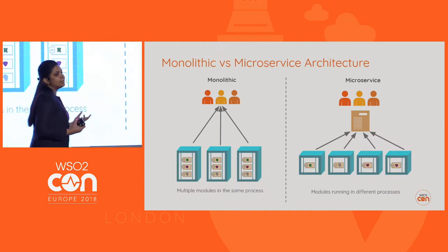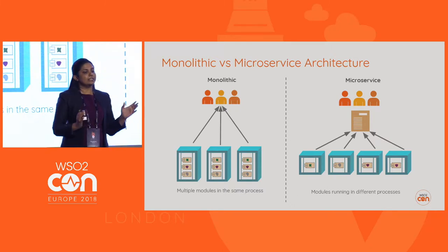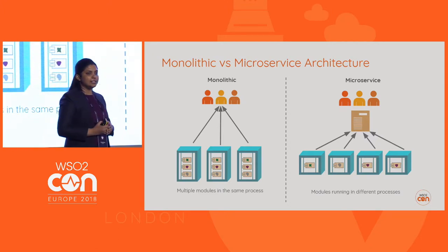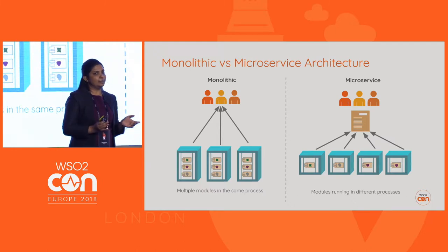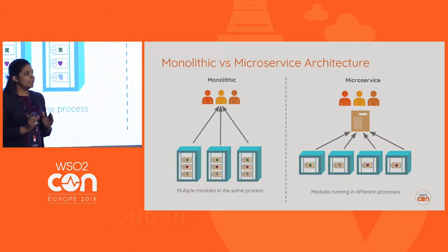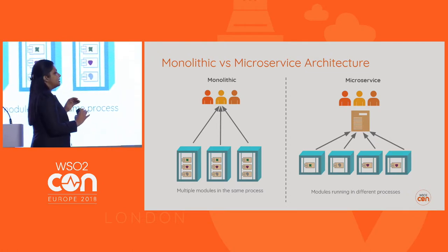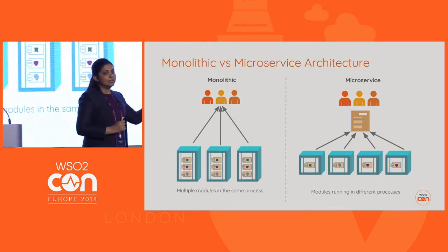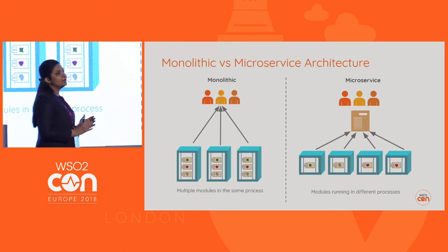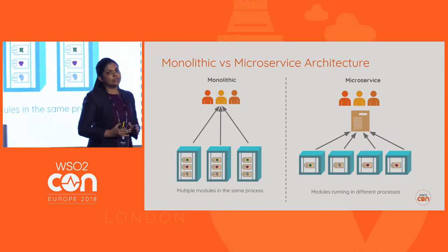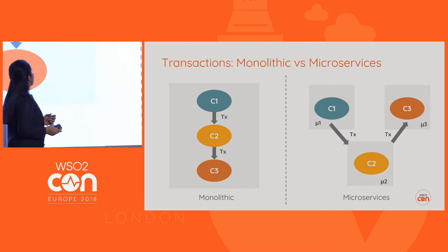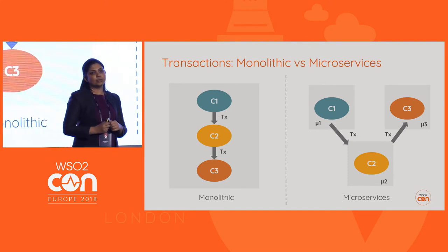Now let's see what problem we are trying to solve. Let's look at the different application architectures. The first is monolithic application architecture, where we have multiple modules or business components running within the same process. There can be multiple replicas, but within each application all modules share the same process. As opposed to that, we have microservice architecture, where the same business components now run in different environments as different services.